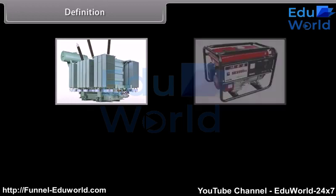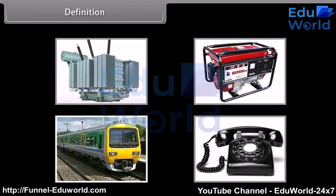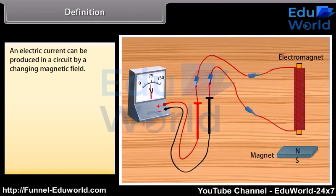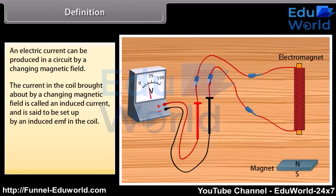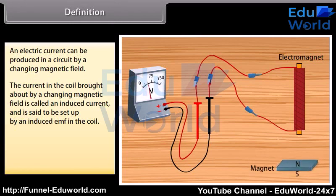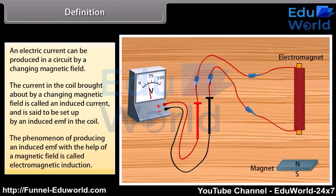In our everyday life, electromagnetic induction plays a vital role. Transformer, generator, train, and telephone are some examples which work on the principle of electromagnetic induction. An electric current can be produced in a circuit by a changing magnetic field. The current in the coil brought about by a changing magnetic field is called an induced current, said to be set up by an induced EMF in the coil. The phenomenon of producing an induced EMF with the help of a magnetic field is called electromagnetic induction.